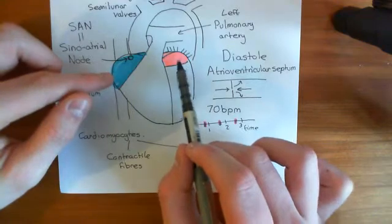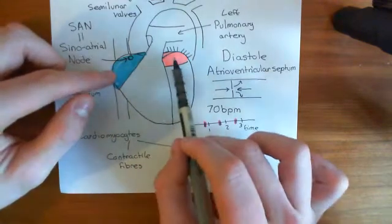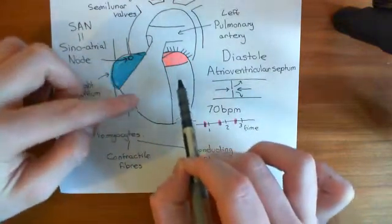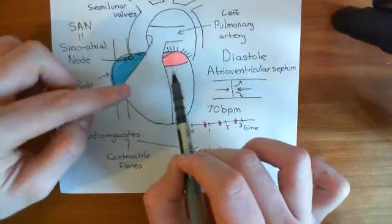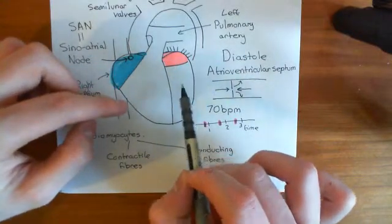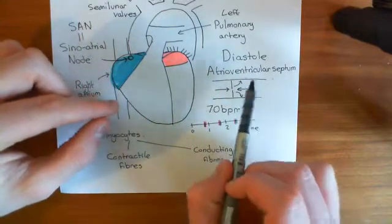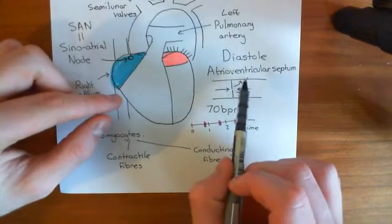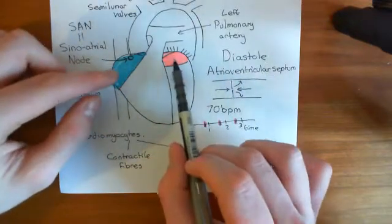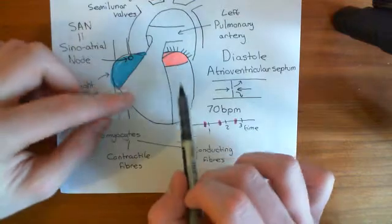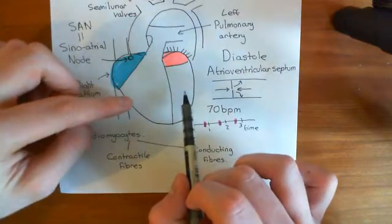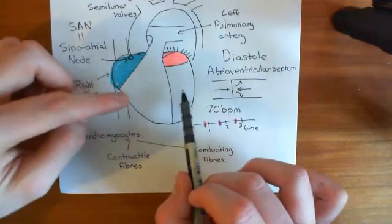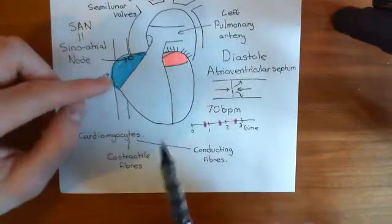However, the cardiomyocytes of the atria are not electrically connected to the cardiomyocytes of the ventricles — in fact, they are very unelectrically connected. There is a great big septum between the two to stop electrical activity in the atria causing electrical activity in the ventricles. So this doesn't spread down to the ventricles, not yet.